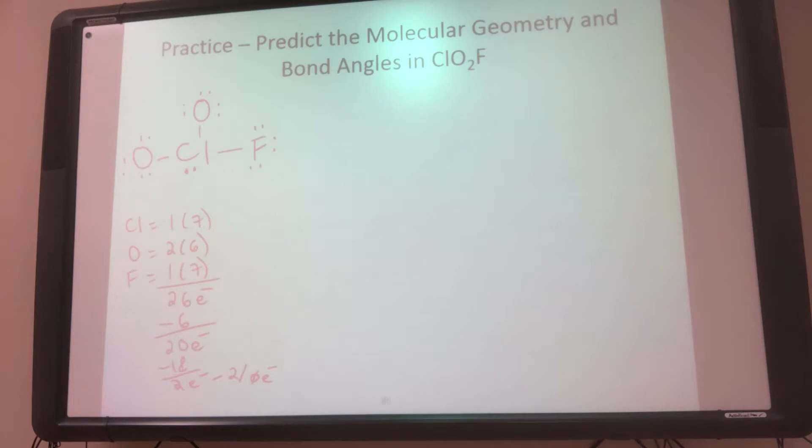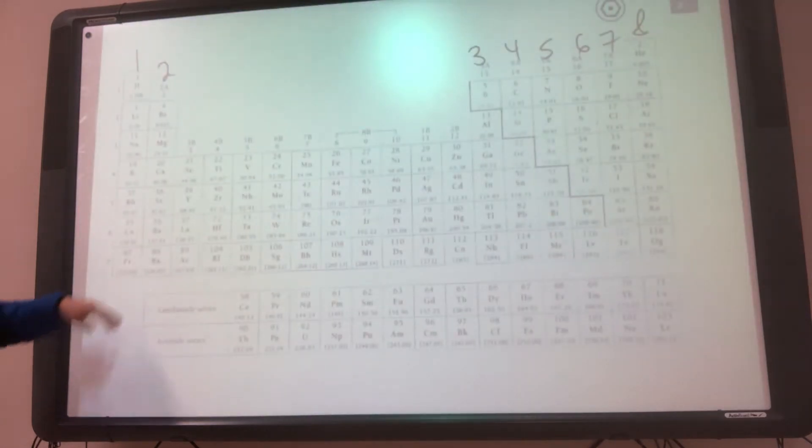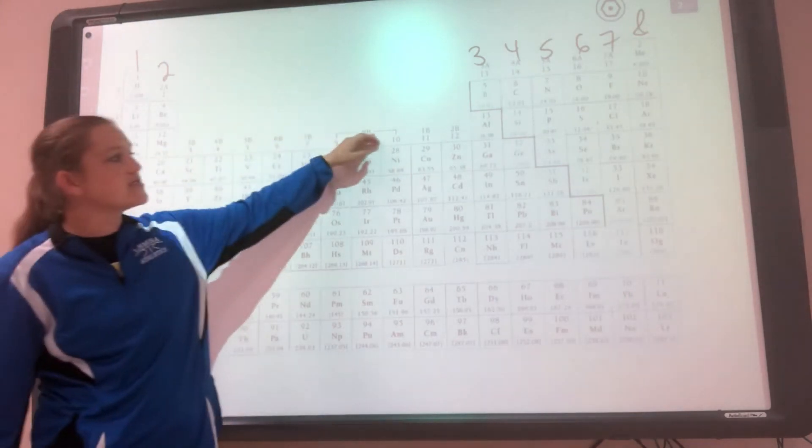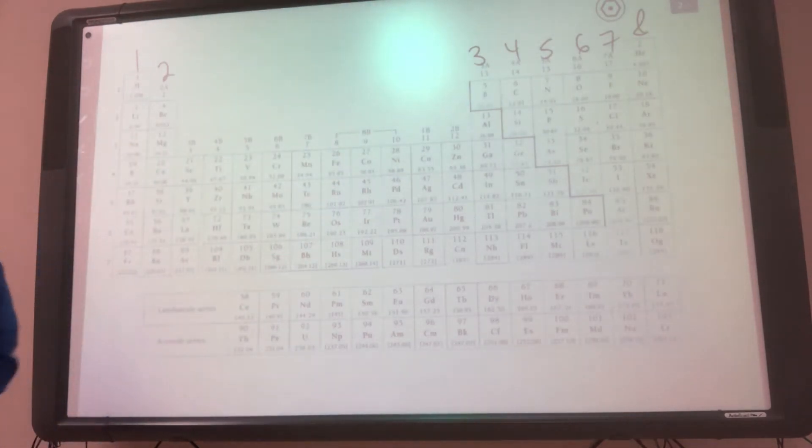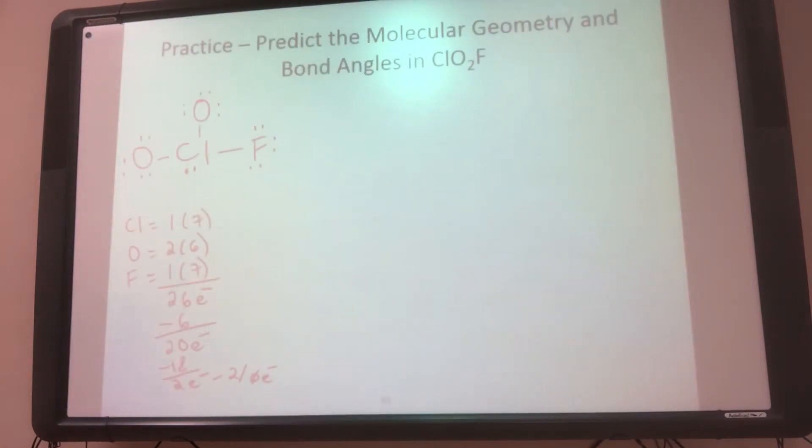So then I want to say, okay, chlorine's got 8. He's happy, but can he be happier? So can chlorine expand? So I look here. Chlorine is in row 3, which means he can expand. So I need to do some formal charges.